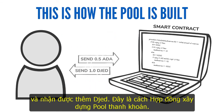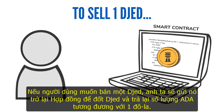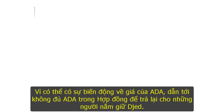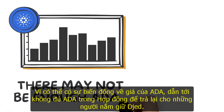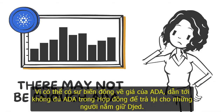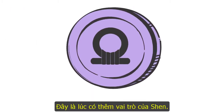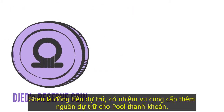This process can be repeated — users can send more and more ADA to the contract and receive more Djed, which is how the contract builds its pool. If the user wants to sell one Djed, they send it back to the contract, which will burn the Djed and send back the amount of ADA equivalent to one dollar. However, fluctuations in ADA's price may mean there is not enough ADA in the contract to give back to Djed holders.